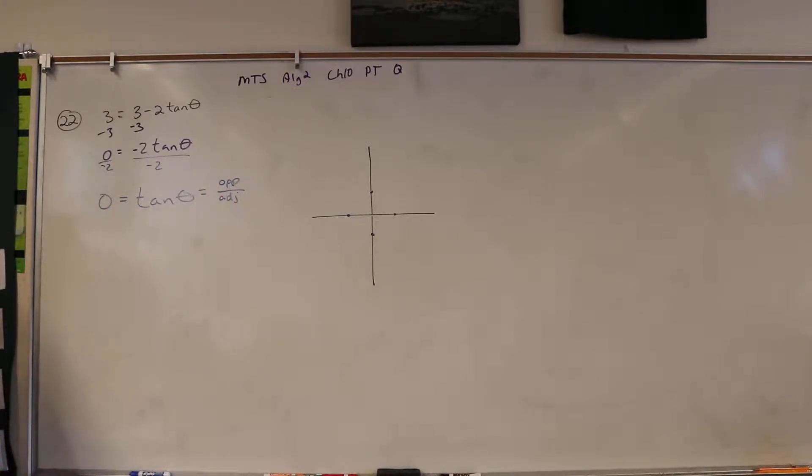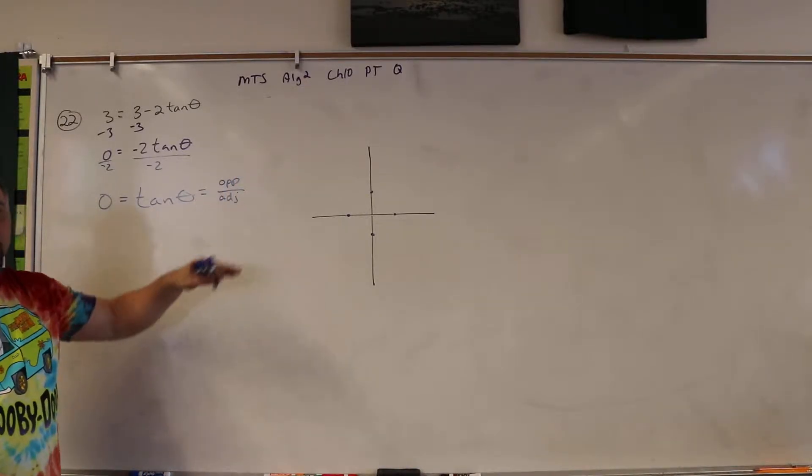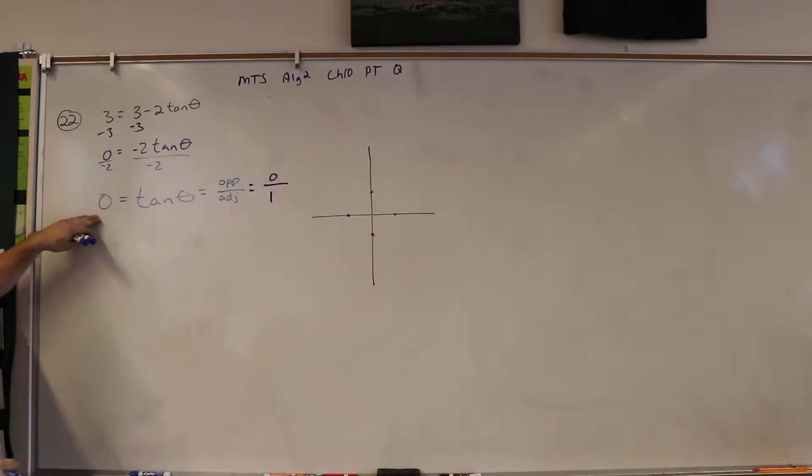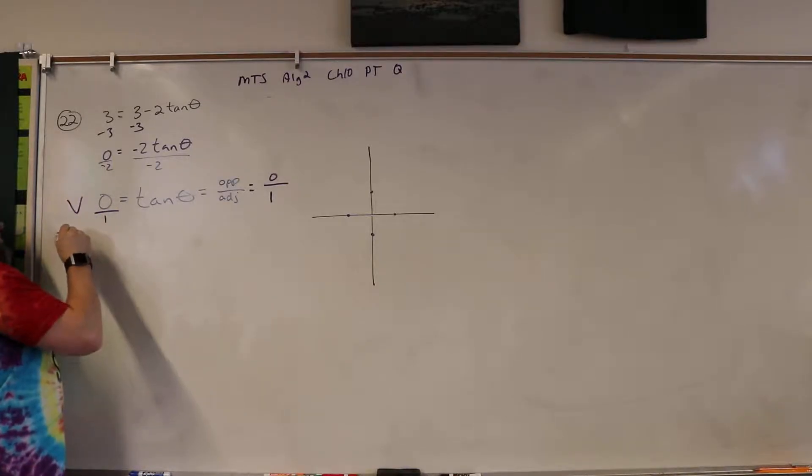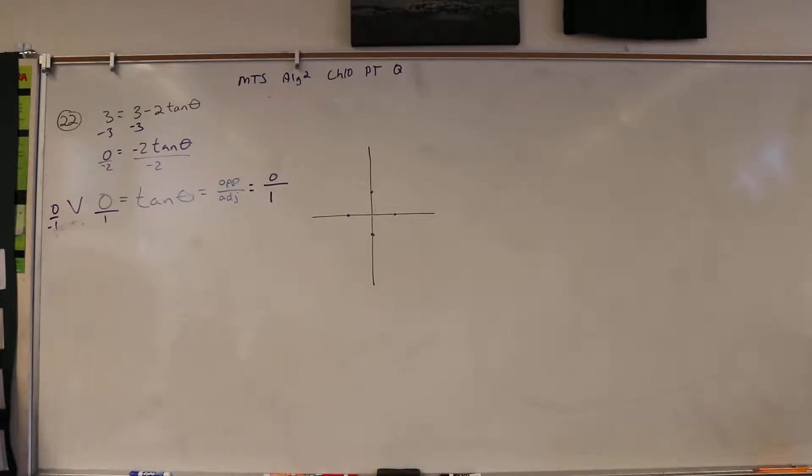Now that means the opposite side has to be zero, right? Because you can't have the adjacent side be zero, because if the adjacent side is zero and the opposite side is one, then it's gonna be undefined, right? You can't have zero in the bottom. So adjacent has to be one. Get this, one over zero. That's really what this is. I know it looks like a negative two, but what this really is is zero over one. Now it doesn't matter if this is one or if this is negative one, correct? Because zero divided by negative one is still zero. Does that make sense? Yes.